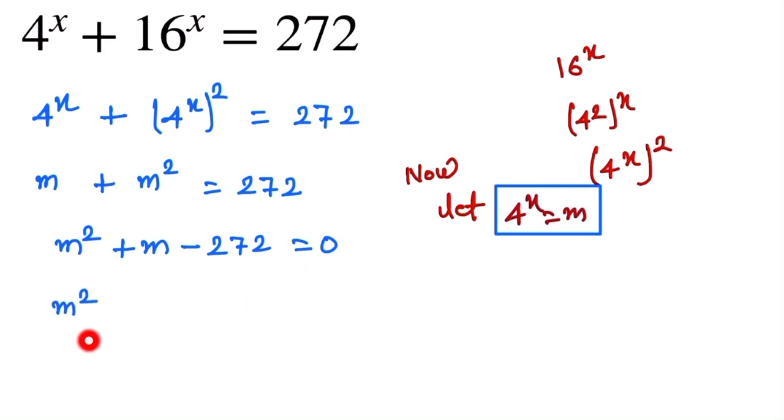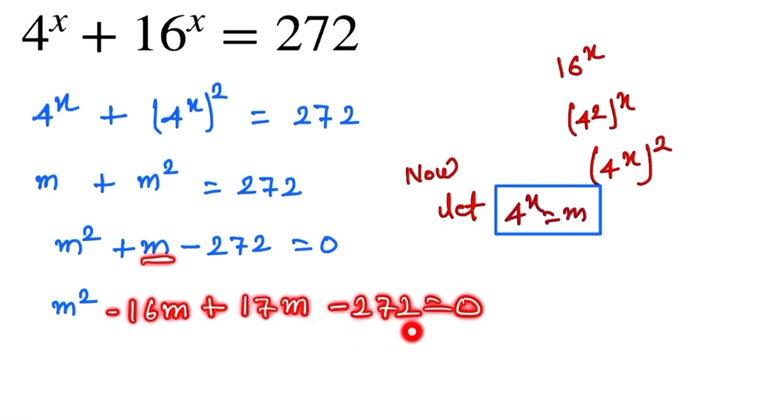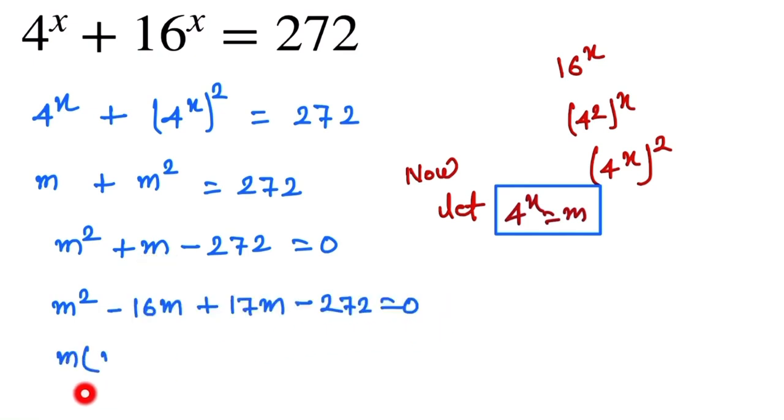Now we factor this: m^2 - 16m + 17m - 272 = 0. So m is common, giving m(m - 16), and here 17 is common, giving 17(m - 16) = 0.